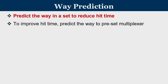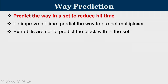In a set associative cache, even though tag comparison is parallel, at the end only the place where a hit occurred transfers data from that particular cache line. What we do in the way prediction technique is inherit the property of a direct mapped cache in terms of hit time, while the underlying cache is actually a 2-way or 4-way associative cache. We preselect one particular way in a given set with the help of a multiplexer.